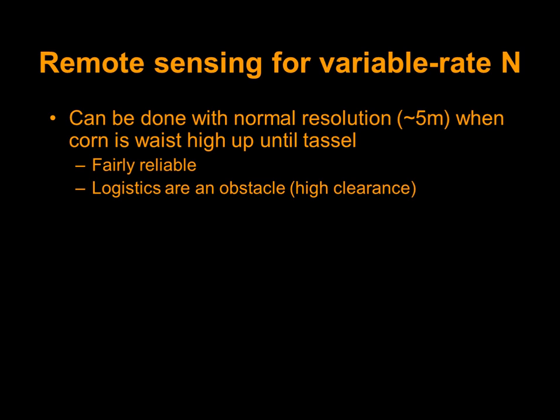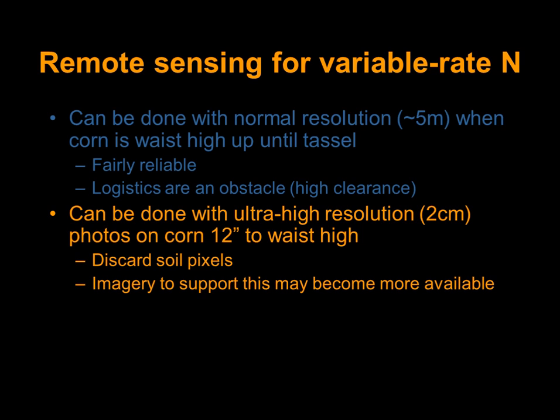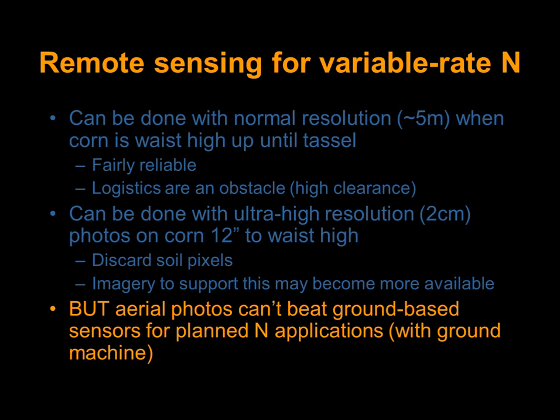Remote sensing can be done with normal resolution when corn is waist-high up until tassel, but people don't generally do that on purpose — the challenge is getting a high-clearance applicator through corn past waist height. Images also have a lot of soil background noise before that point. We have solved that with ultra-high-resolution aerial photos and did it on corn that was 12 inches tall and got a pretty good answer. You have to discard all the soil pixels to get good information, but it's not a very practical process, and ground-based sensors are going to be hard to beat.